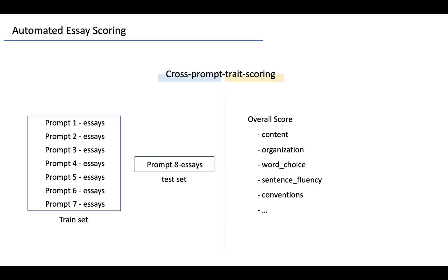Here, you can think of prompts as questions and traits as specific rubrics. Our system is trained on the ASAP and ASAP++ data, which are the most popular datasets for automated essay scoring.